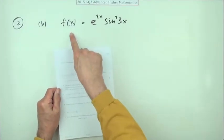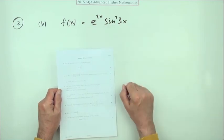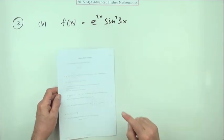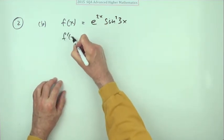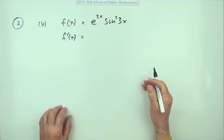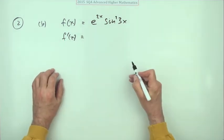And part b, given f of x equals this product here with functions of functions in it, obtain f dashed x. Again for three marks. Well this time it's quite clearly a product, so in obtaining f dashed x that will be the product rule, and the first mark is for using the product rule, evidence of using it.